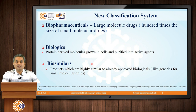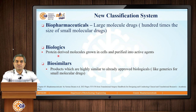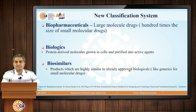Currently, biopharmaceuticals are classified as per the new system. Biopharmaceuticals are large molecular drugs, which are 100 times the size of small molecular drugs. They have two categories. The first is biologics — protein-derived molecules grown in cells and further purified. The second is biosimilars, defined as products which are highly similar to already approved biologicals. This concept is similar to generics in small molecular pharmaceuticals.